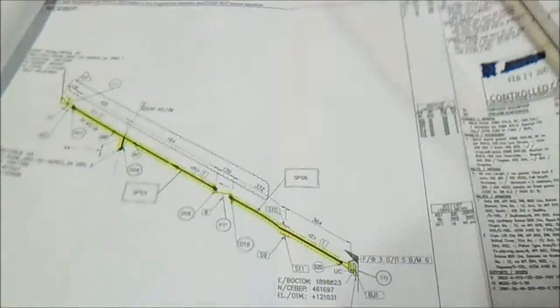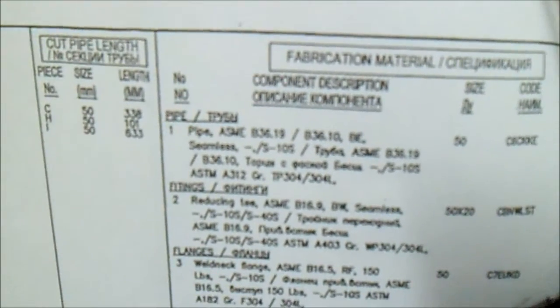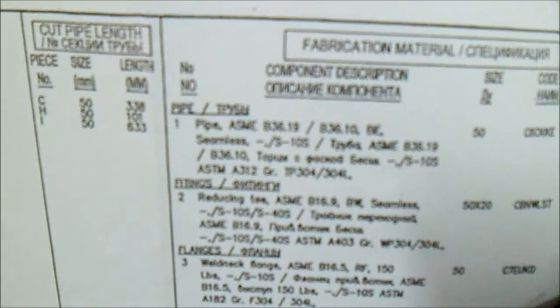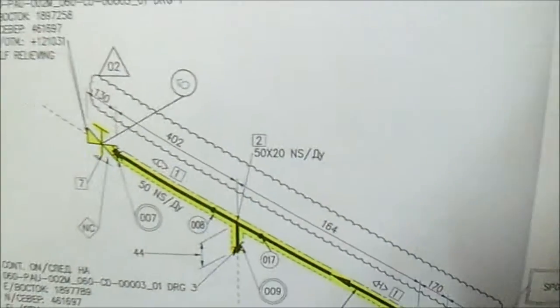If you have this isometric drawing, first you must check the revision number. These are important: revision number, sheet number, line number, and the area. And of course, the material description - the pipe, what type of pipe, the fittings, what type of flanges, gaskets, and bolts.